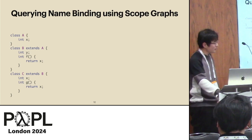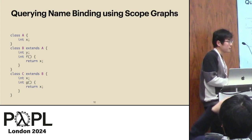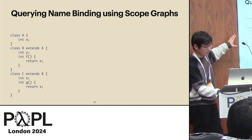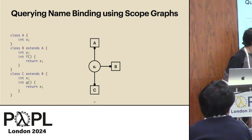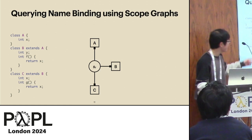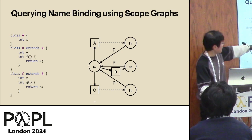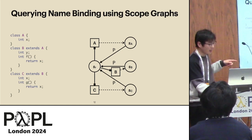Let's focus on the first key feature: name-binding using scope graphs. I want to illustrate how scope graphs enable us to query name-binding information. Consider the program we used for renaming. In a scope graph, you first have the root scope SR. There is a declaration for each class — A represents a declaration for class A, B for class B, C for class C. Each class is associated with a scope: A with scope SA, B with SB, C with SC.